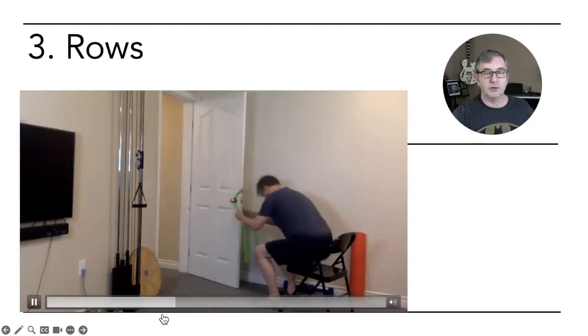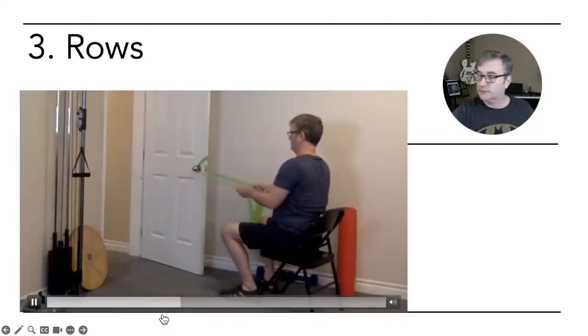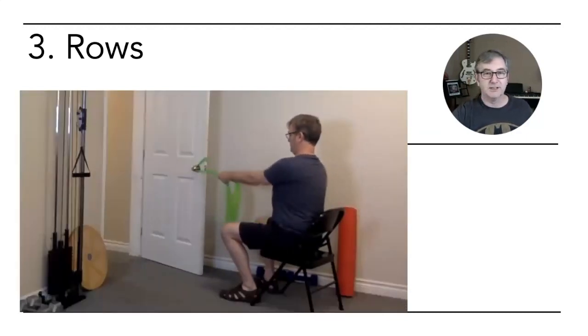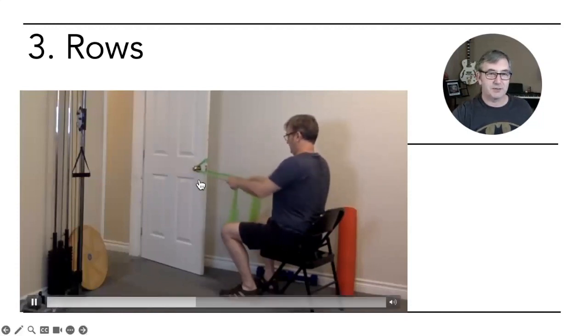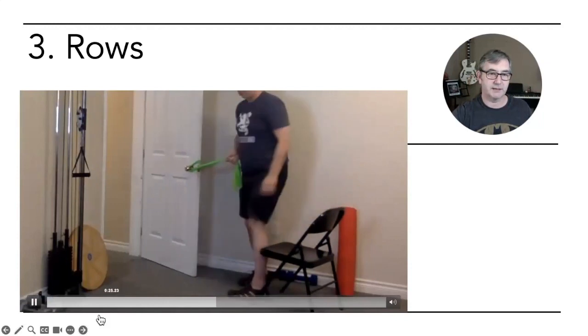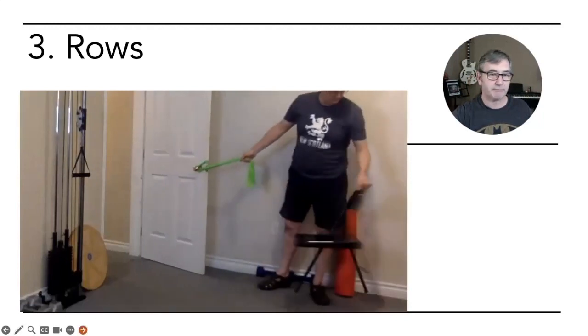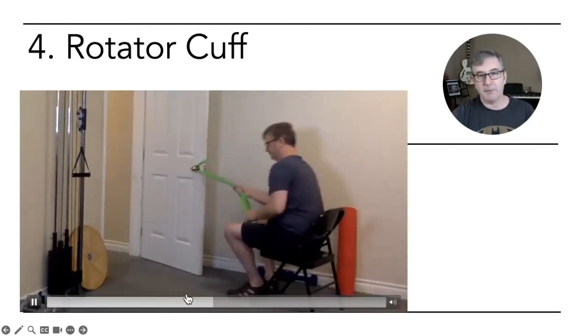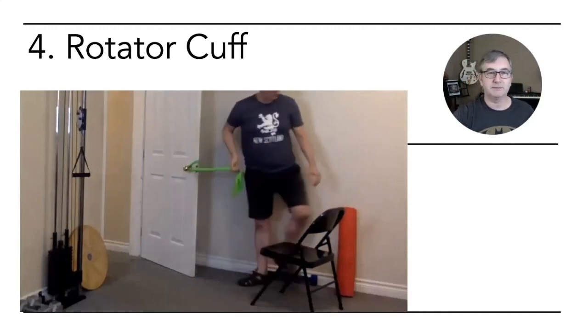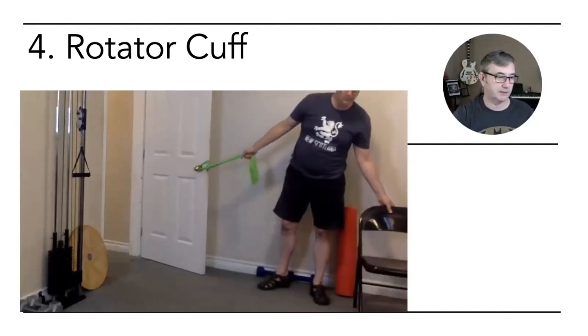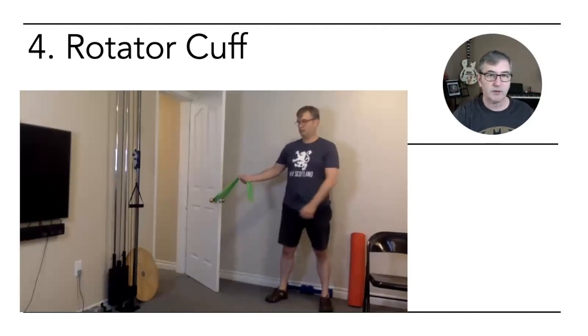Then moving on to rows. I like to use a door with the doorknobs like this. You can double wrap a TheraBand around there and you just kind of draw your shoulder blades and elbows back and do your seated rows that way. So that'll get those rhomboids and traps. These are the pulling muscles, pulling motions that we don't necessarily get otherwise.